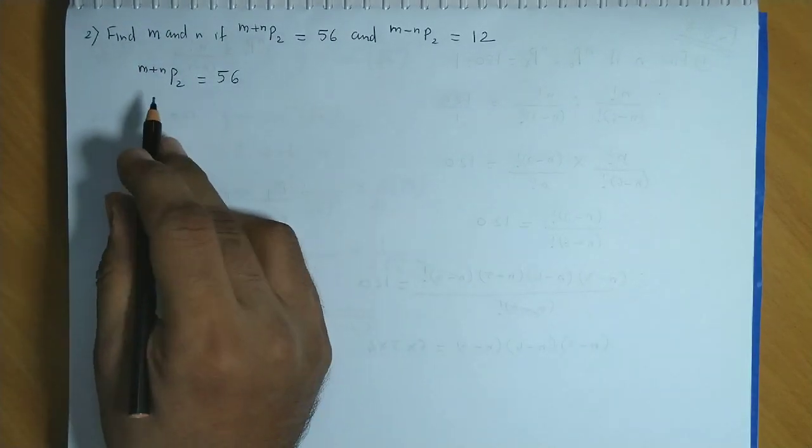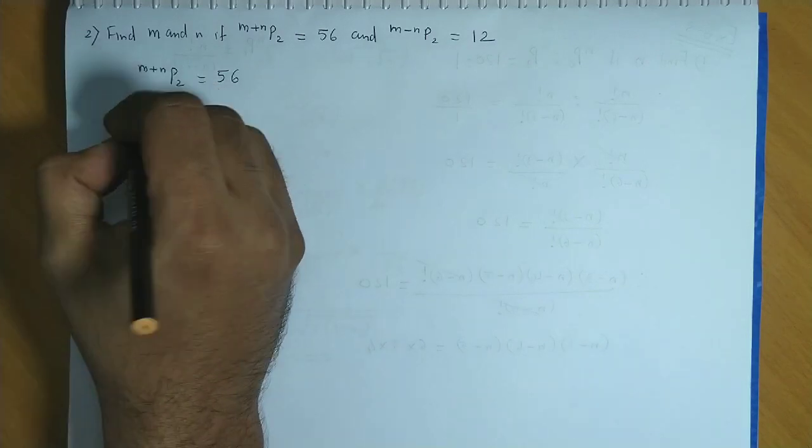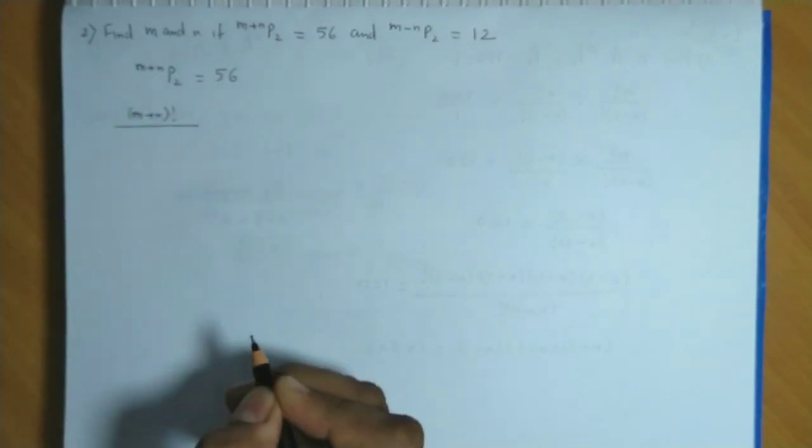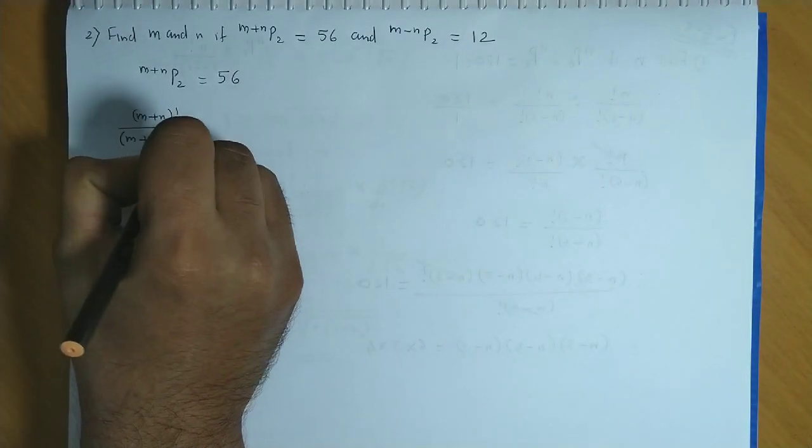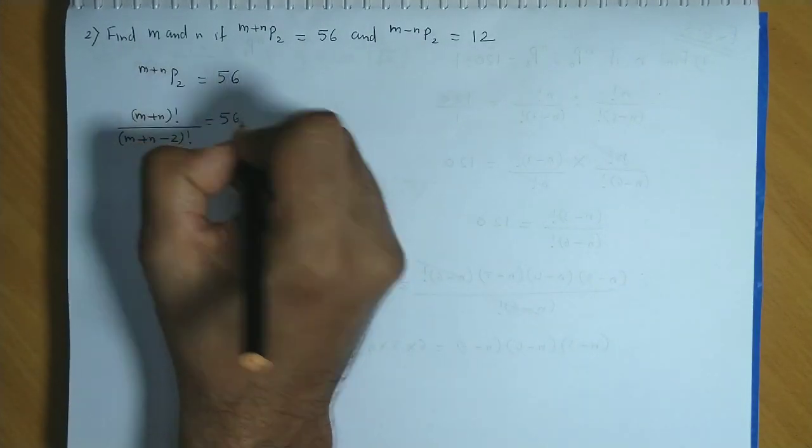Now we use permutation formula NPR formula. So we get m plus n factorial divided by m plus n minus 2 factorial is equal to 56.